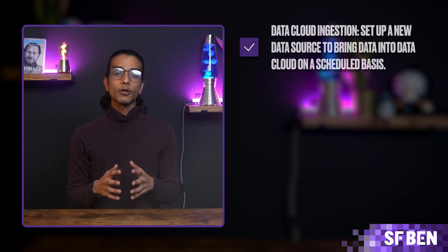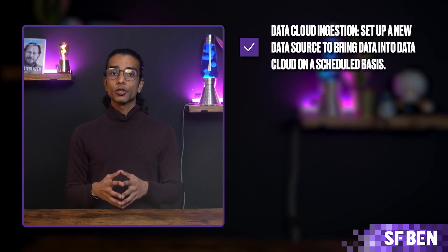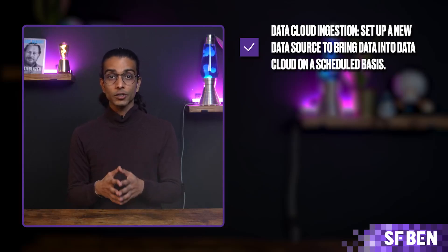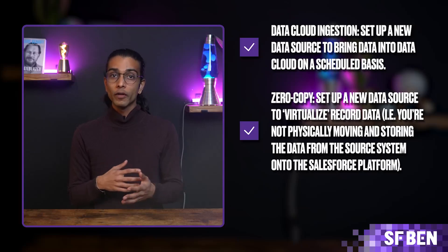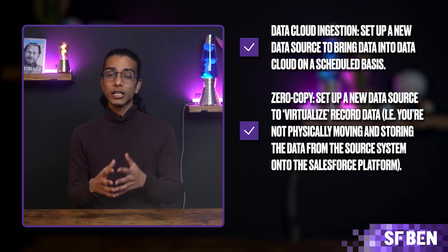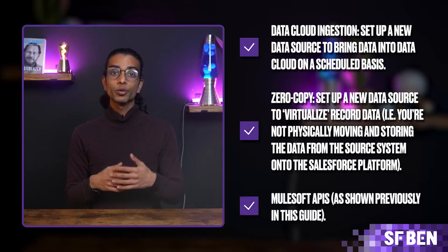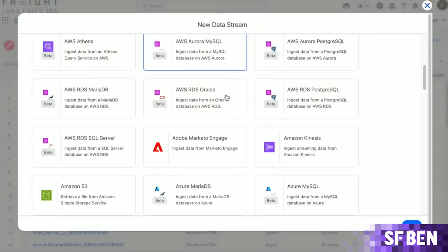As we saw with AgentForce demos, the data required for highly contextual responses may not be stored directly in Salesforce. There are a few options to bring this data into AgentForce. Data Cloud ingestion: set up a new data source to bring data into Data Cloud on a scheduled basis. Zero copy: set up a new data source to virtualize record data, meaning you're not physically moving and storing the data from the source system onto the Salesforce platform. MuleSoft APIs, which we saw earlier in this video. An example could be connecting your order management system data that resides in Snowflake, which happens to be an out-of-the-box connector offered by Salesforce.